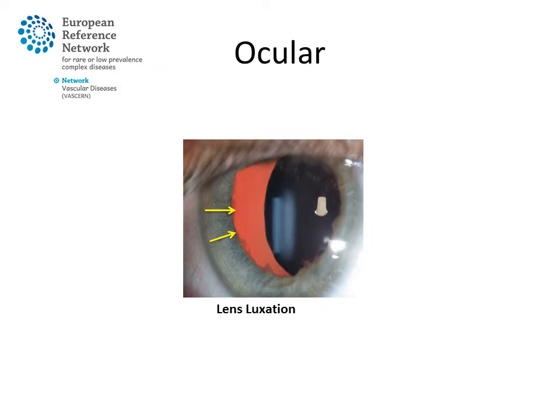The other cardinal organ system when it comes to diagnosing Marfan syndrome is the ocular system. Up to 60% of people with Marfan syndrome will present with luxation of the lens, caused by weakness of tiny fibers in the eye that are supposed to keep the lenses in their place. Moderate to severe myopia, or nearsightedness, is another typical ocular manifestation.